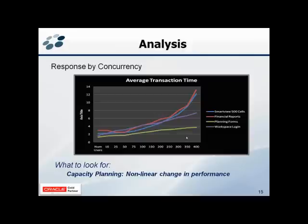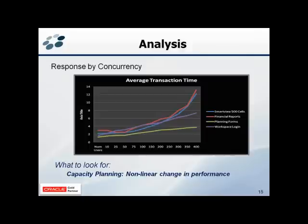From this we can start doing predictive capacity planning. I can see that I could add a bunch of users running planning forms and it's still going to degrade gracefully — I could add another 50 users running planning forms and it will likely be okay. Whereas financial reports and SmartView have already taken that turn where adding another 50 users will put performance really off the chart. By being able to graph response by concurrency, we can start extrapolating what our performance will be as we add users. This graph is built into Excelsis.